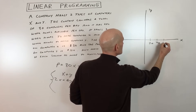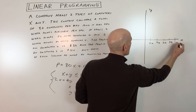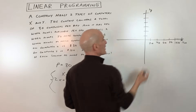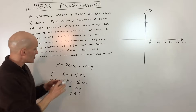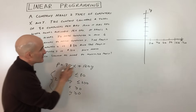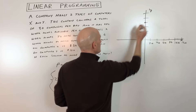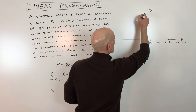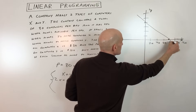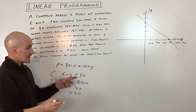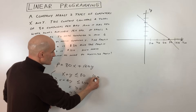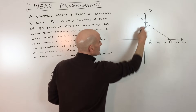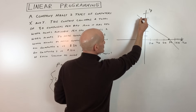For the first constraint X plus Y equals 80: if X is zero, Y is 80, and if Y is zero, X is 80. Drawing that line and testing the point (0,0) — zero is less than or equal to 80, which is true — so we shade the region toward the origin. The true region is below and to the left of this line.